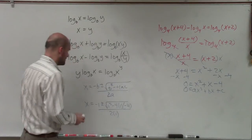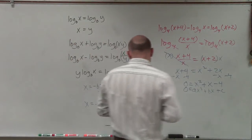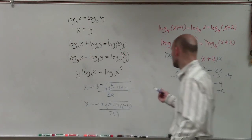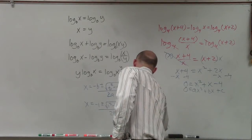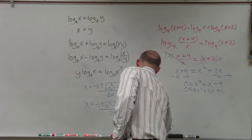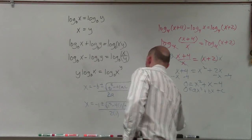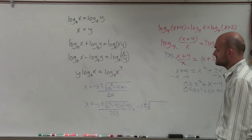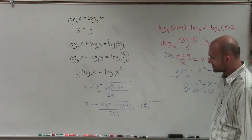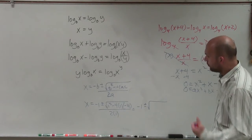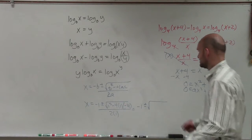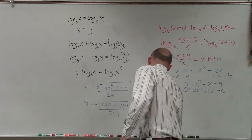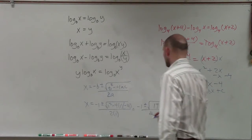All right, so now we go ahead and simplify. I have negative 1 plus or minus the square root — well, 1 squared is 1, and negative 4 times negative 4 is positive 16. So 1 plus 16 is 17, all divided by 2.